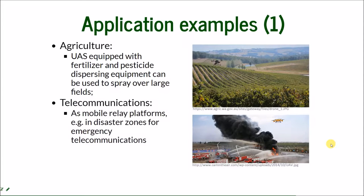In telecommunications, UAS can be used as mobile relay platforms. For example, in disaster zones or where regular transmitters have been destroyed, emergency telecommunications can be based on the drone — specifically, transmitters mounted on the drone.